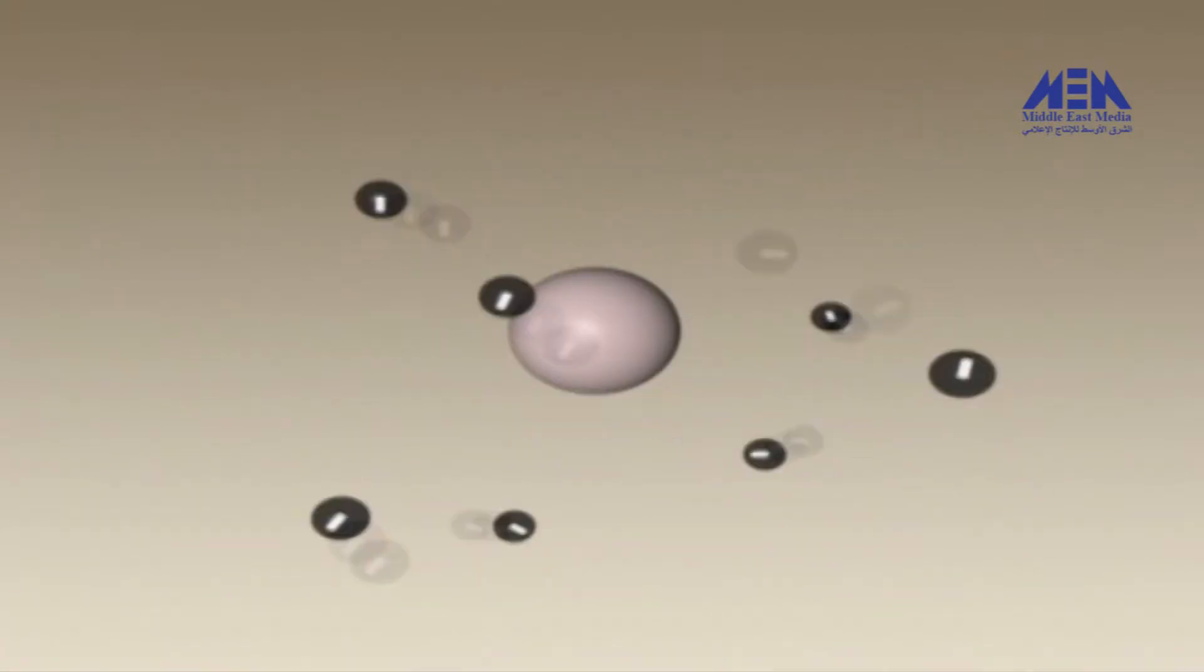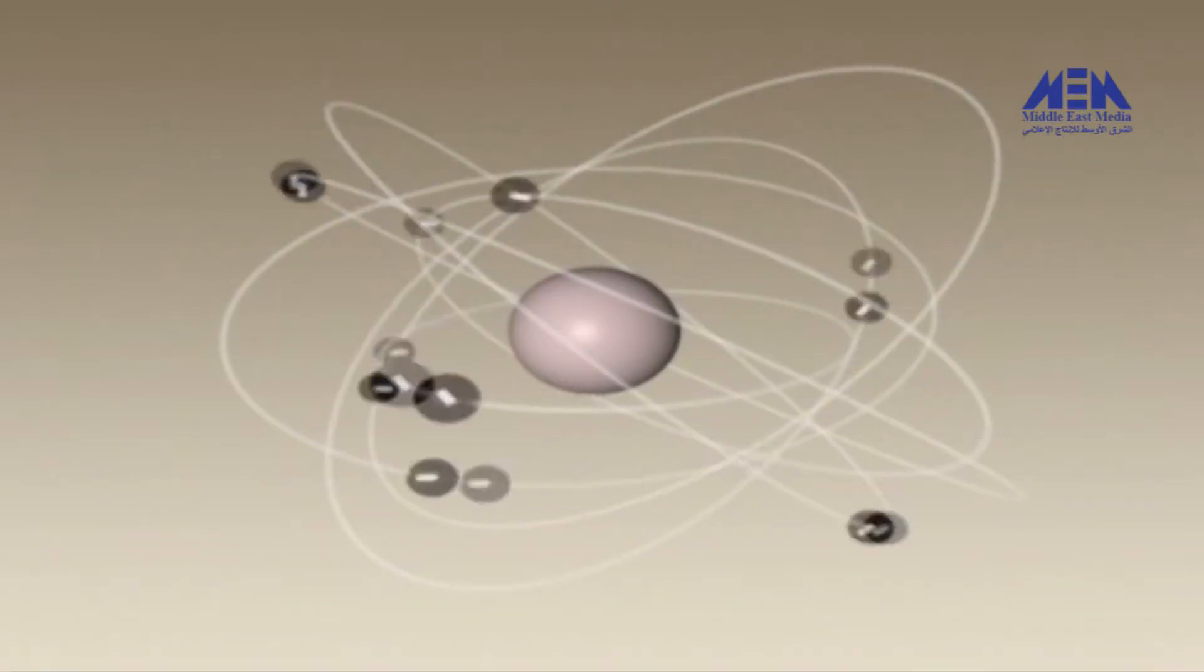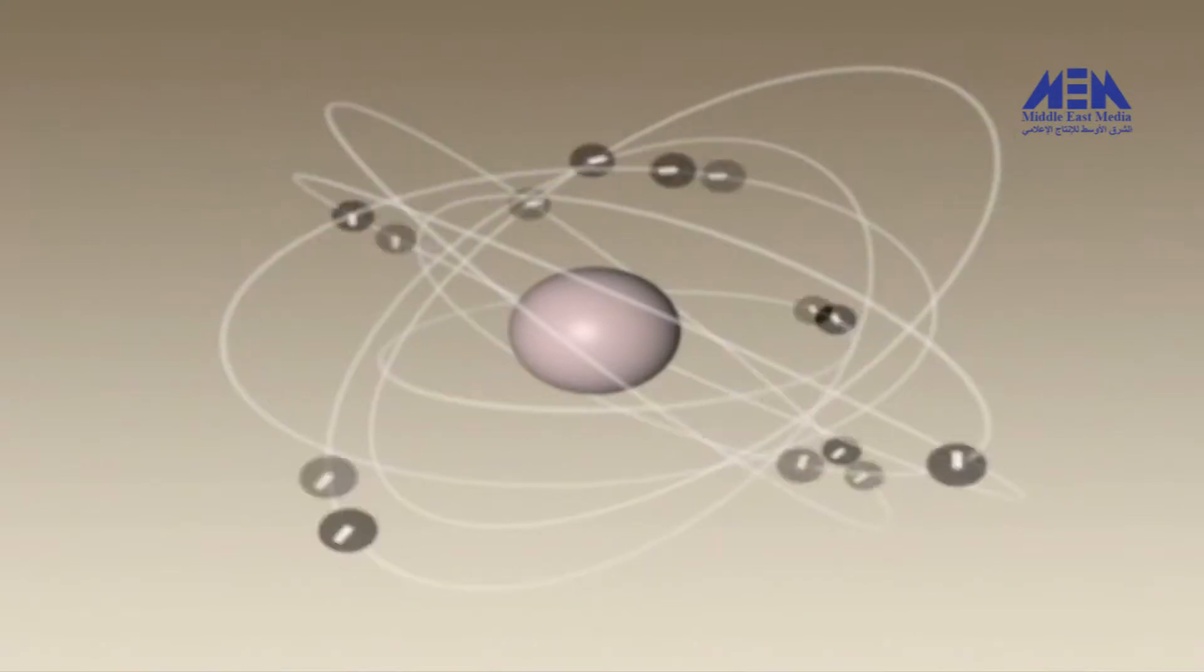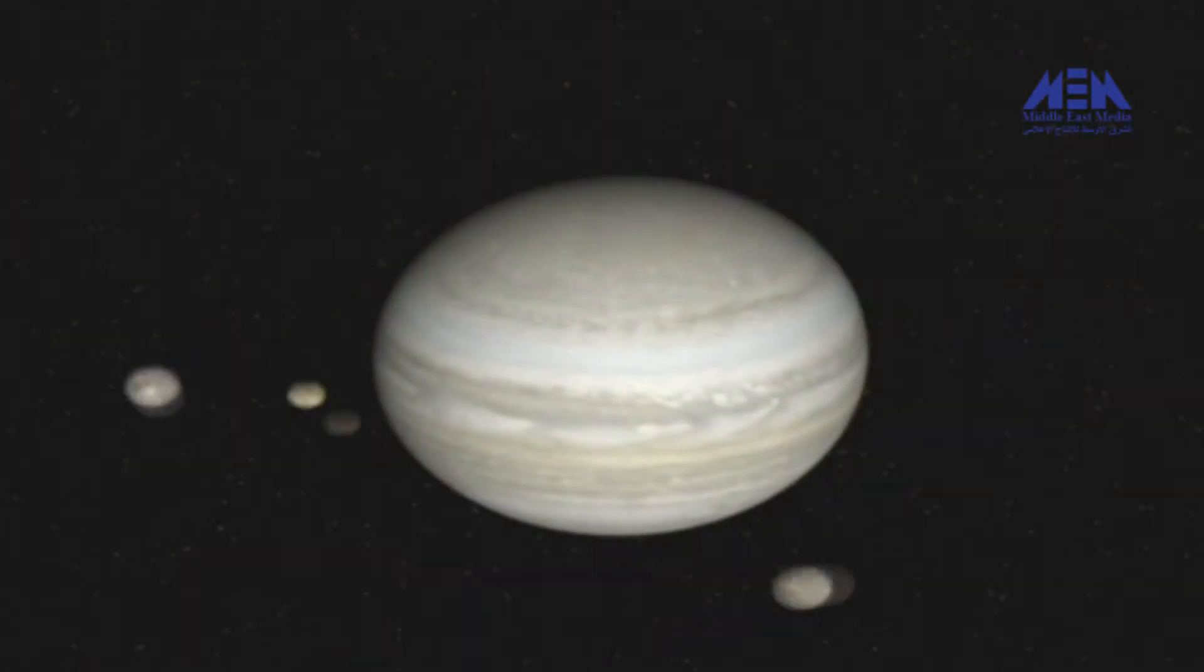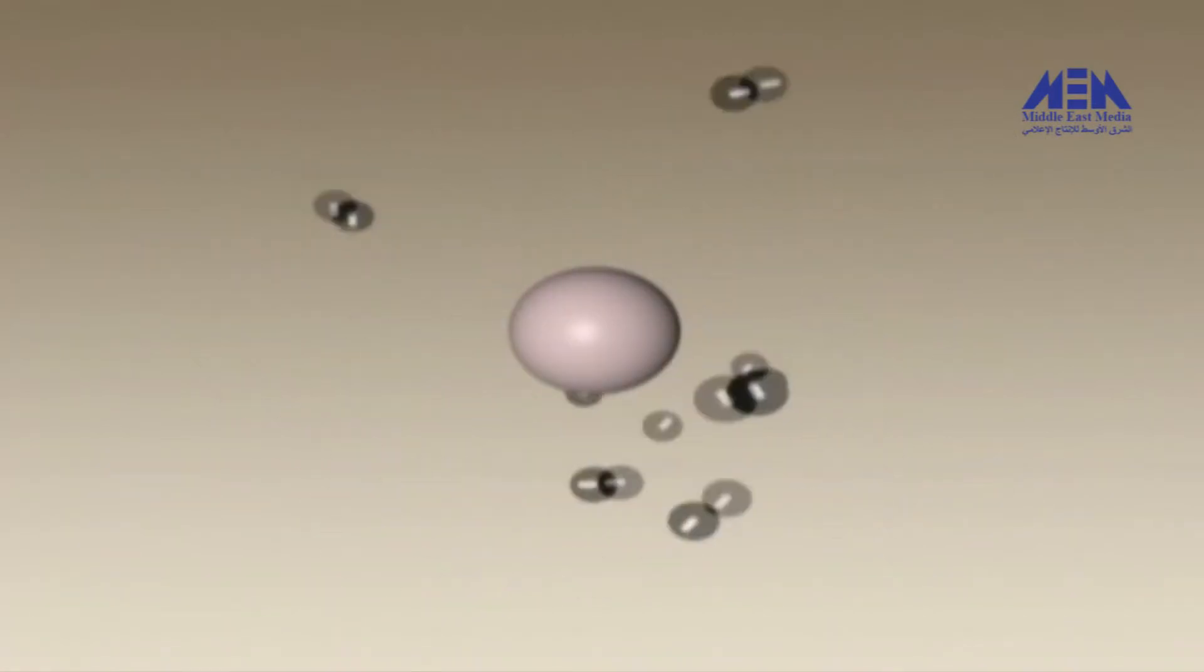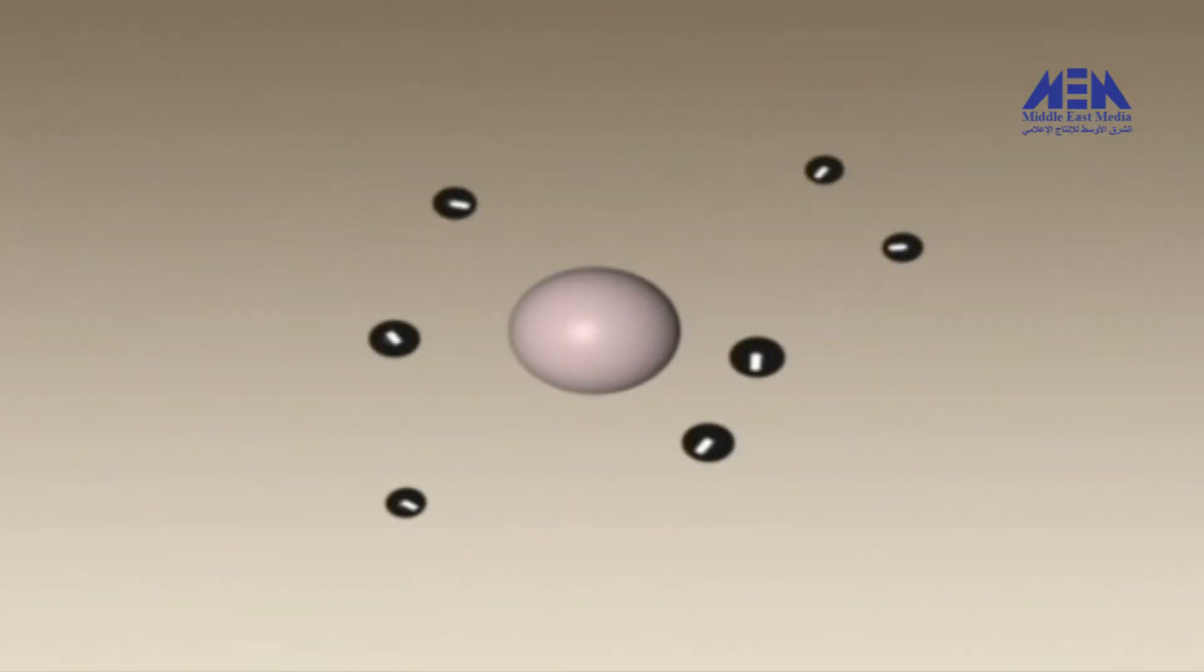This Rutherford and Bohr planetary model of the atom does provide us with some insight into atomic structure. But as the 20th century progressed, it became clear that inner space and outer space do not so conveniently mirror each other. This planetary model provides little or no useful information about the arrangement of electrons within the atom, something that is all-important to the chemical behavior of elements.